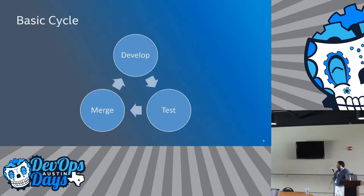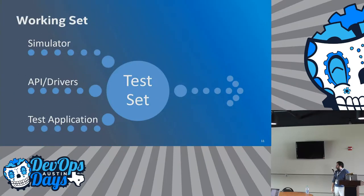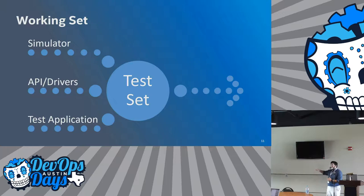The basic cycle of code development is: develop, test, merge, and keep repeating. Now in a single system you would have development taking place toward a test at the same time. But here we work in a system where the simulator, the libraries and drivers, and the test application are all being written together.